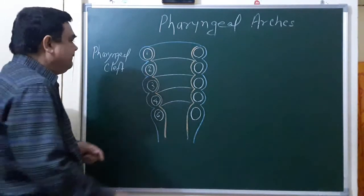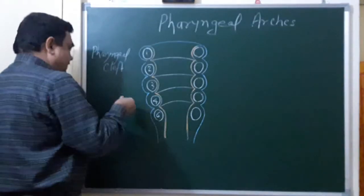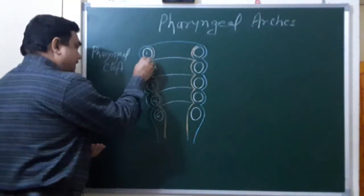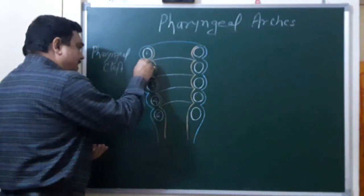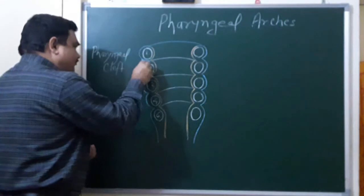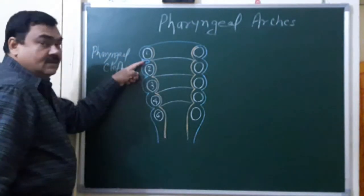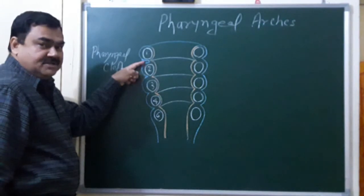This pharyngeal cleft, first cleft forms the external acoustic meatus. This is covering the epithelial lining of the external acoustic meatus. So this first groove forms the epithelial lining of the external acoustic meatus.